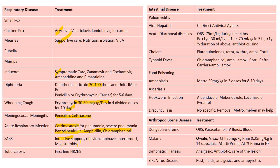For acute respiratory infection: cotrimoxazole when pneumonia is present; for severe pneumonia, benzyl penicillin, ampicillin, or chloramphenicol. SARS: intensive support — ribavirin, lopinavir, interferon, IV immunoglobulin; steroids have a role. Tuberculosis: first-line drugs are H, R, Z, E, S. For viral hepatitis, only hepatitis C requires direct antiviral agents.